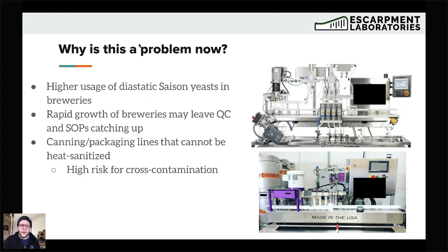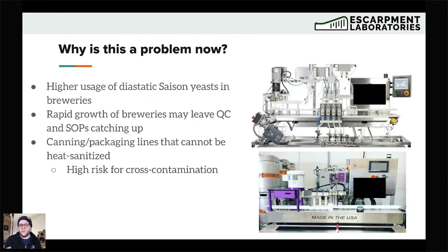Another challenging area is that a lot of canning and packaging lines in the market can't be heat-sanitized. These are great devices — a way for a brewery to start canning for far less than the million-plus dollars the previous generation cost. But the trade-off is that some parts cannot be heat-sanitized to 85°C. That can create a risk for cross-contamination. There is a need to make sure that cleaning SOPs are both in place and validated if you're using smaller canning lines.